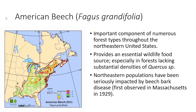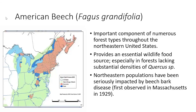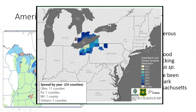Northeastern populations have been impacted by beech bark disease — not to be confused with beech leaf disease — for a long time now, up to almost 100 years since it was first observed in Massachusetts in 1929. Beech bark disease actually started out in Nova Scotia and moved in a southwestern direction toward central Ohio. The opposite pattern is happening with beech leaf disease. Beech leaf disease was first detected in Lake County, Ohio, back in 2012.